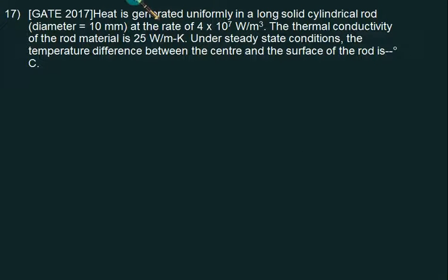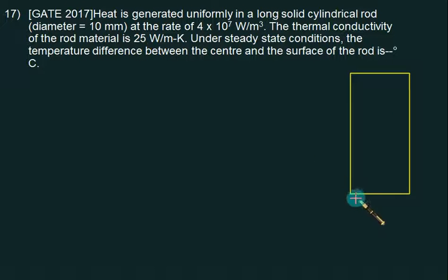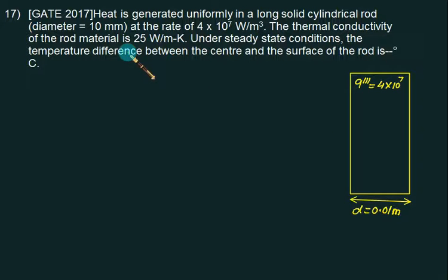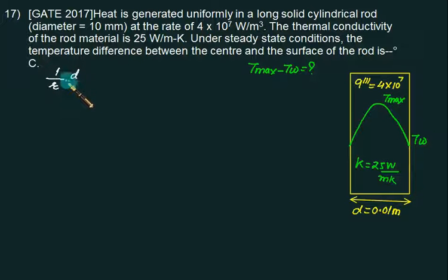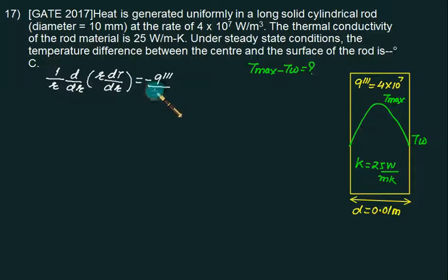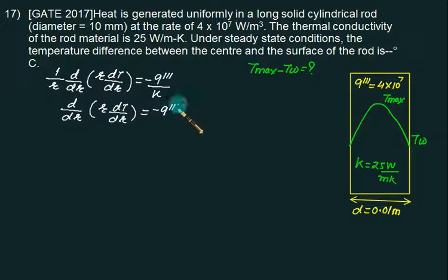The same problem appeared in 2017, but this time we want the difference between the maximum temperature and the wall temperature. We have a rod of diameter 10 mm, Q‴ = 4×10⁷ W/m³, and thermal conductivity K = 25 W/mK. The temperature has a downward parabolic distribution with T_max at center and T_W at the surface. We go directly to the second-order differential equation for a cylindrical section: (1/r)(d/dr)(r dT/dr) = −Q‴/K. Multiplying both sides by r gives d/dr(r dT/dr) = −Q‴ r/K.